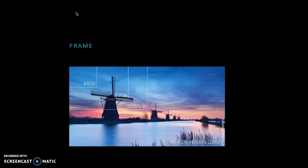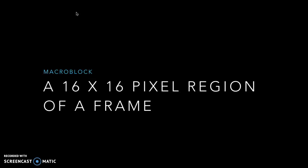A frame is a representation of the complete visual scene obtained by sampling at a given point in time. Simply put, a frame can be thought of as a still image, and a macroblock is a 16 by 16 pixel region of a frame.